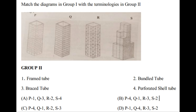Next question: match the diagrams in Group 1 with the terminologies in Group 2. In Group 1, four diagrams P, Q, R, S are given. In Group 2: framed tube, bundled tube, brazed tube, perforated shell tube. The correct answer is P4 — the first diagram is a perforated shell tube. Q1 — this is known as a framed tube. R3 — the R diagram is an example of a brazed tube. And S2 — the S diagram is connected with the bundled tube.